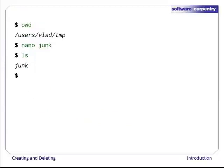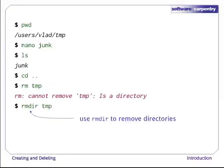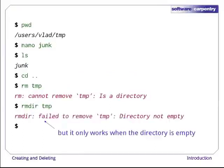Let's recreate that file and then move up one directory to /users/vlad using cd .. If we try to remove the temp directory using rm temp, we get an error message — rm only works on files, not directories. The right command is rmdir, which stands for remove directory. It doesn't work yet either, though, because the directory we're trying to remove isn't empty. This little safety feature can save you a lot of grief, particularly if you are a bad typist.